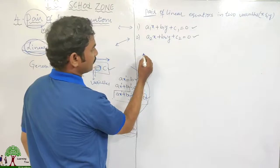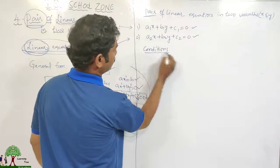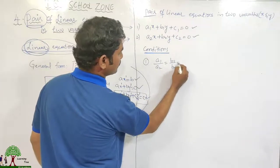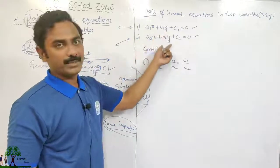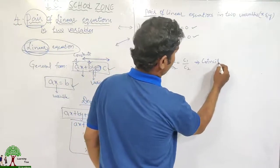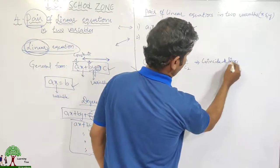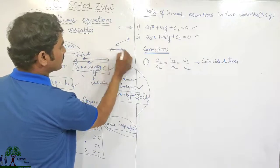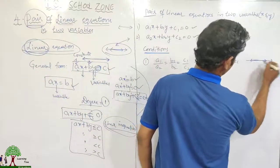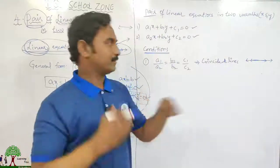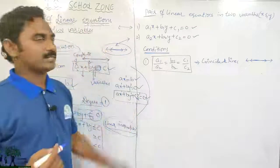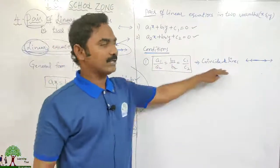There are simple conditions to determine the relationship between the two lines. First condition: if A1/A2 equals B1/B2 equals C1/C2, then these lines are coincident lines — both lines pass through each other, overlapping completely.